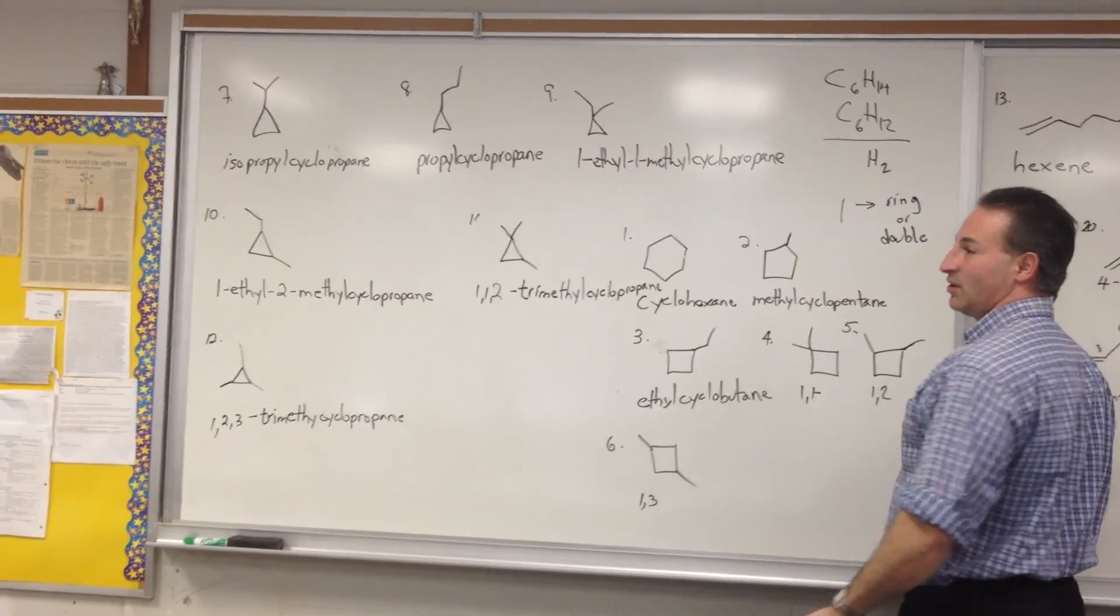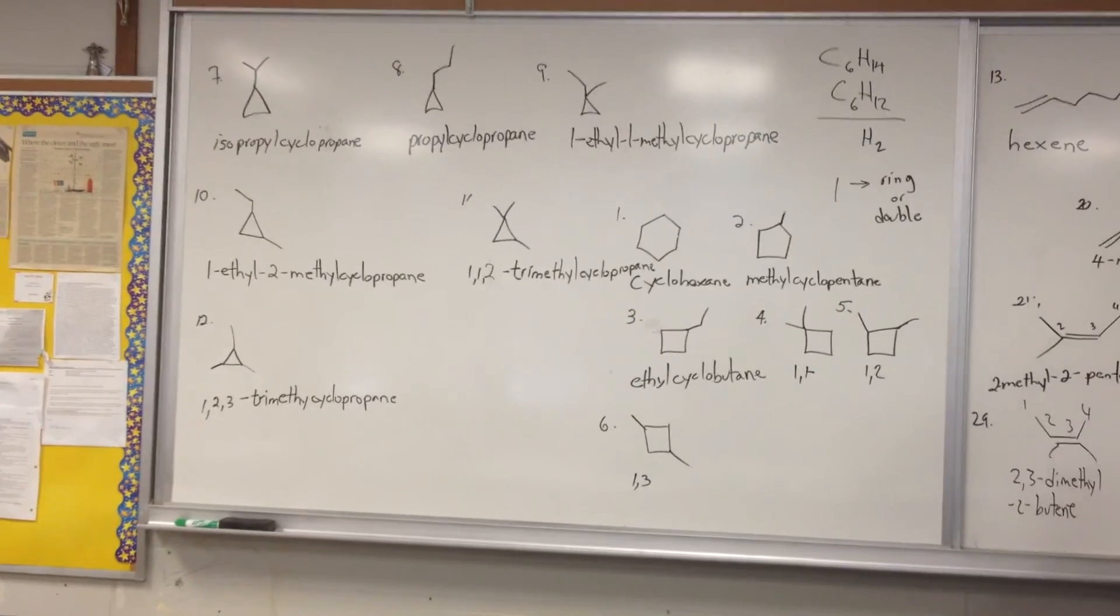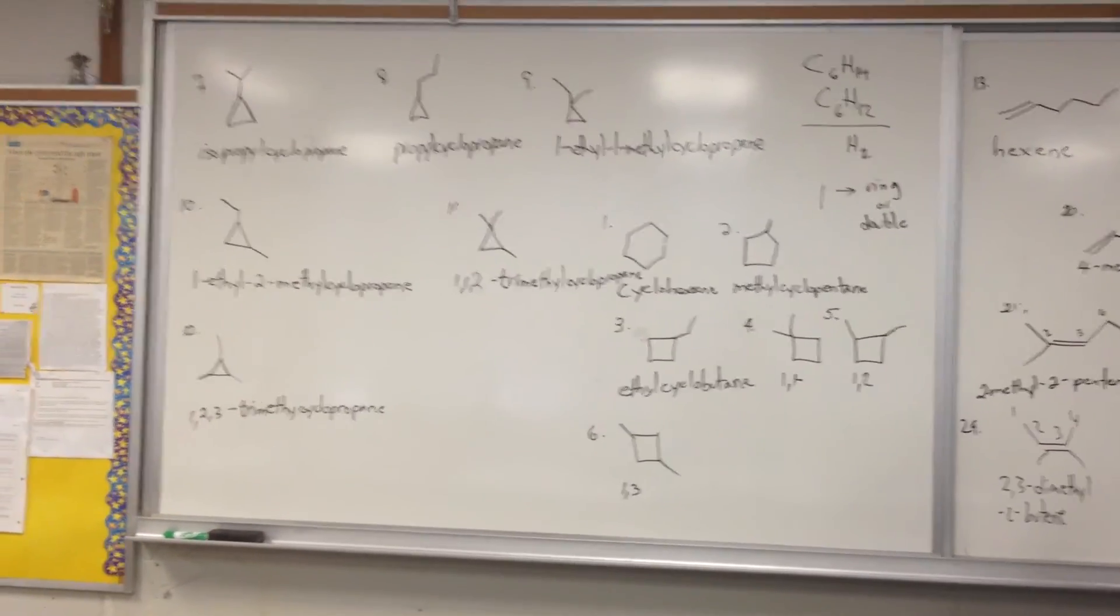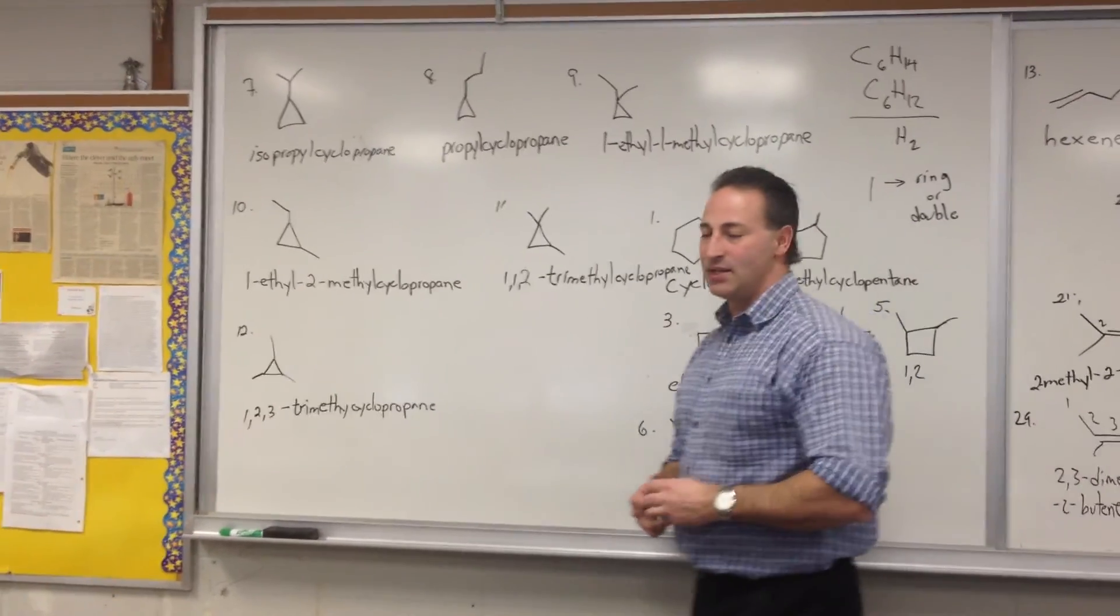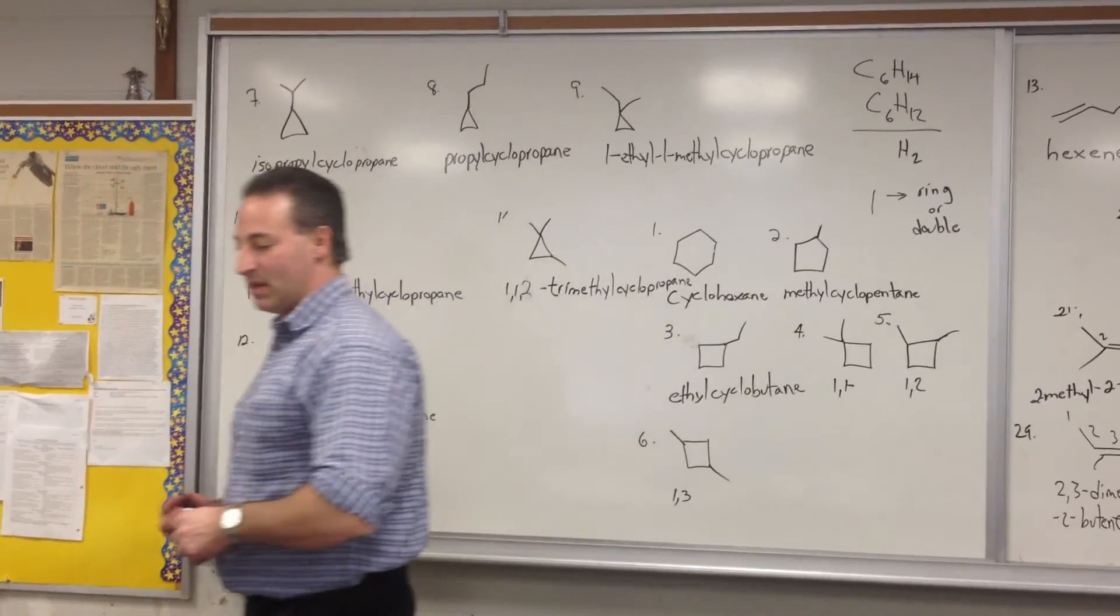If a molecule is missing 8 hydrogen atoms, that usually points to a benzene ring, an aromatic compound. Benzene, for example, has a formula of C6H6, whereas the parent alkane has a formula of C6H14.